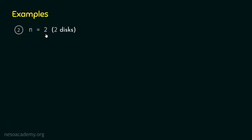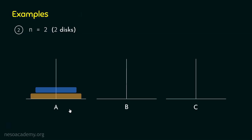Example number two: N equals 2, meaning there are two discs in tower A. Our job is to move these discs from tower A to tower B. We can shift the topmost disc from peg A to peg C first, then shift the bottom disc from peg A to peg B, and finally shift the topmost disc from peg C to peg B.